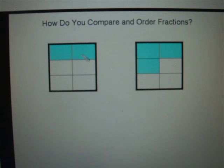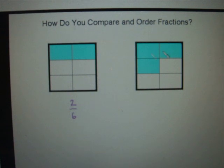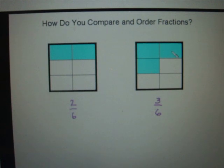Here we have two boxes shaded, and we have six boxes altogether, so the fraction represented by this picture is 2/6. Here we have three shaded boxes and six boxes altogether, so this picture represents the fraction 3/6. We can easily compare these two fractions just by looking at the pictures — there are more boxes shaded in this rectangle than in this one, so 3/6 is larger than 2/6.